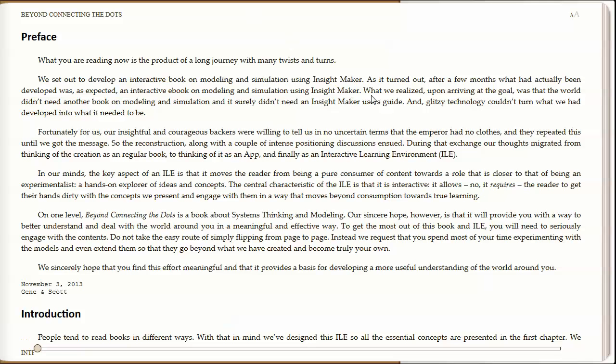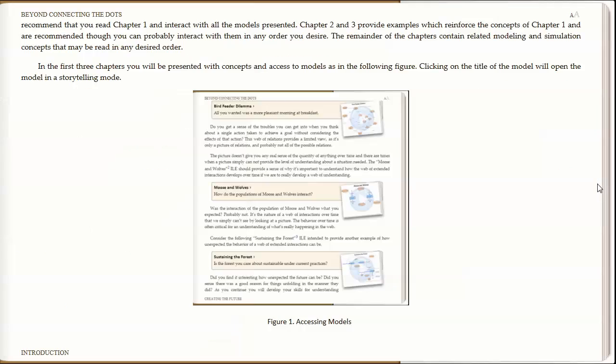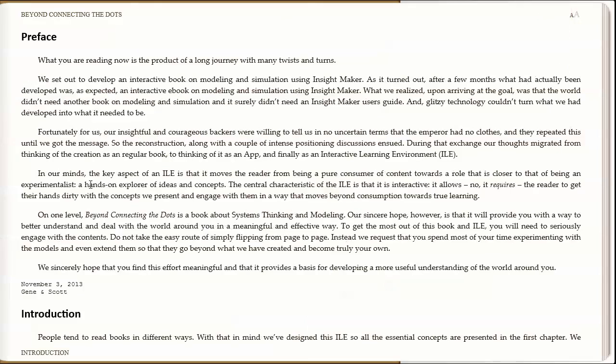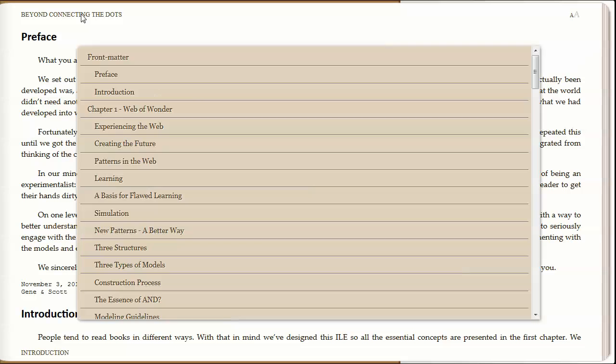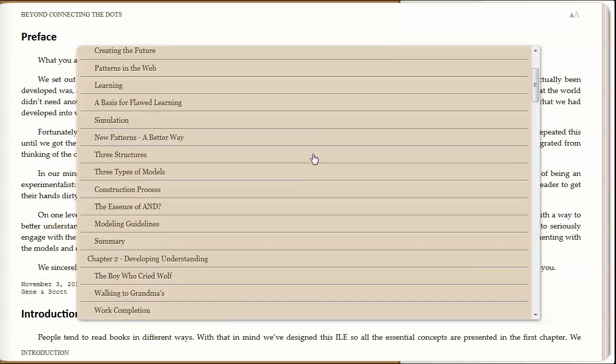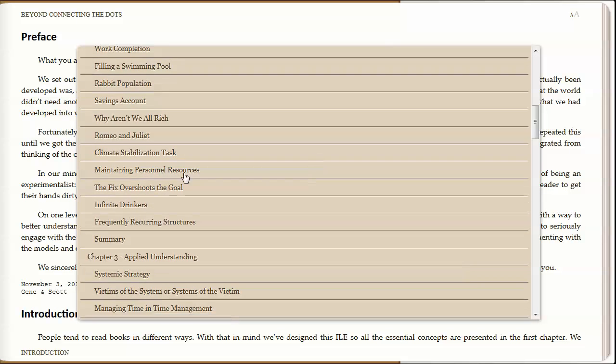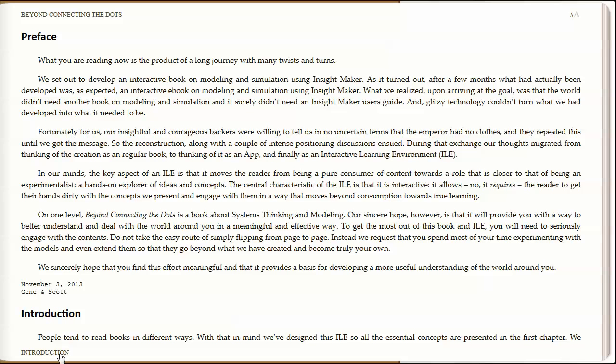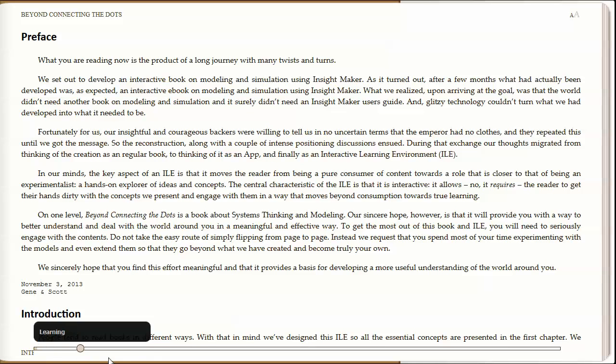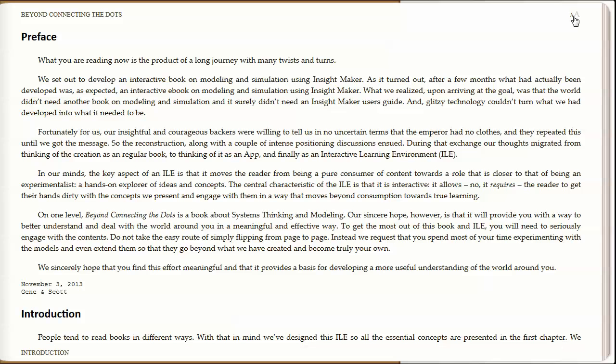When you initially go into Beyond Connecting the Dots, it looks like any other e-book. You can click on the right and go forward or click on the left and change pages. There's an included table of contents that you can scroll through. You can click on the bottom and it shows a slider that you can navigate through the content with. Though that's about the extent, and there's also an option to change the size of the text.